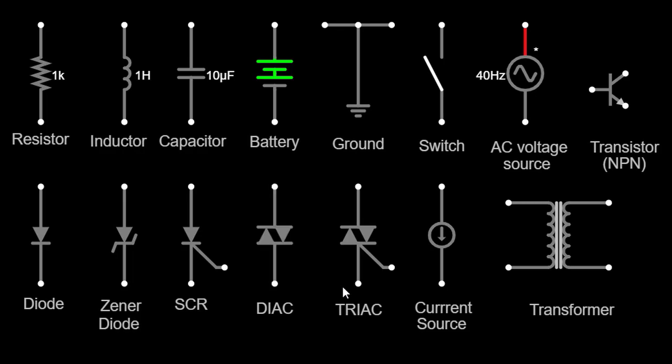The TRIAC symbol combines elements of a transistor and a diode. It is a three-terminal device that can conduct current in both directions when triggered. TRIACs are widely used in AC power control applications, such as dimmer switches and motor speed control.